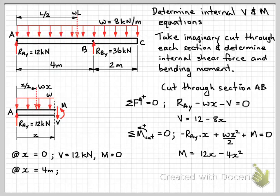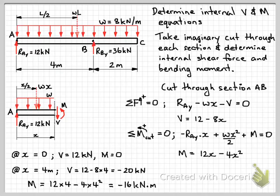All right, so at X equals four, so at point B, do the same thing again. Substitute into our shear force equation. X equals four gives us a shear force of minus 20 kilonewtons. Do the same thing for our moment. Substitute four into here, and that gives us a moment of minus 16 kilonewton metres.